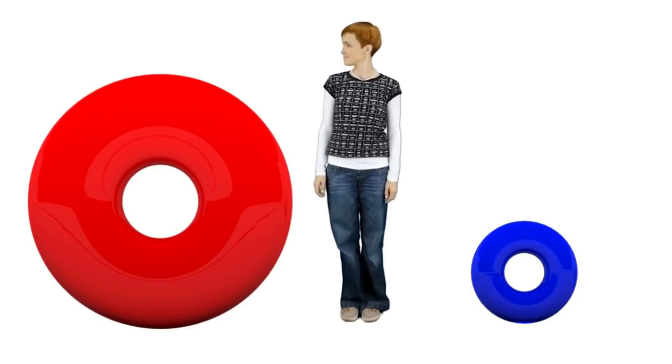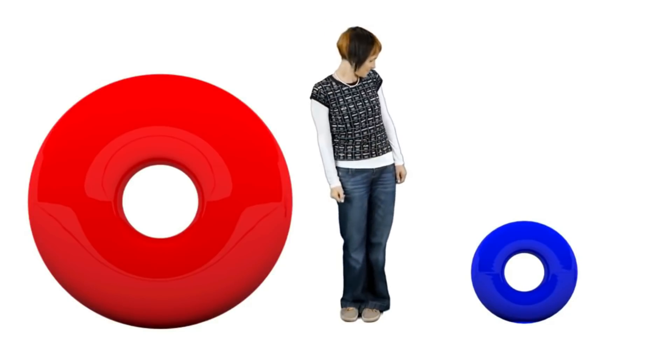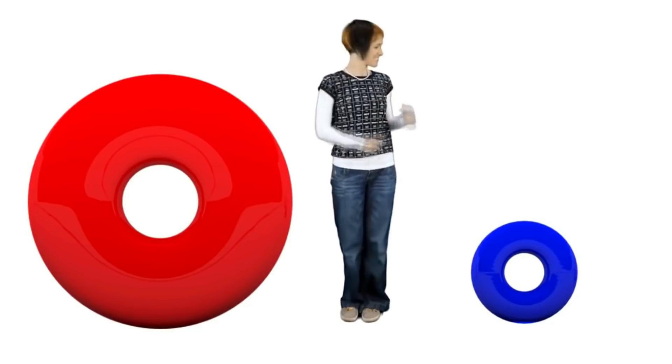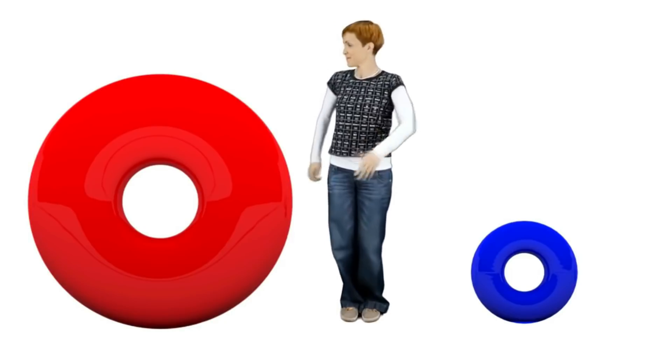These rings are for a pyramid. We have a big red ring and a small blue ring. One ring is big and one ring is small.